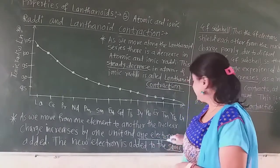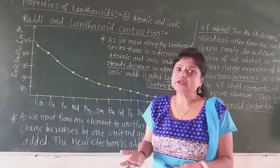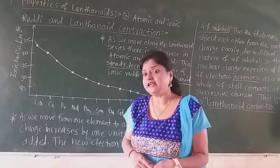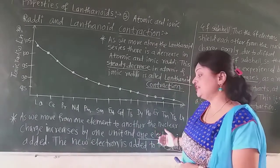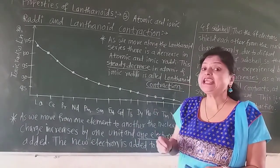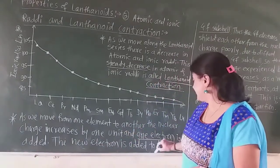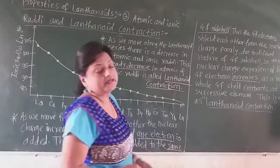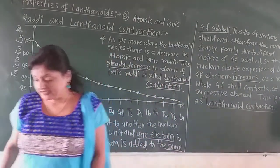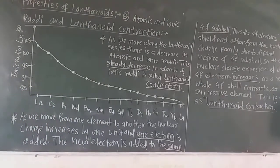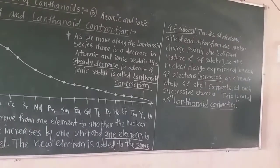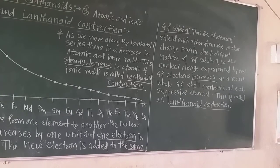At the same time, as one proton increases there is also an increase of one electron. But that one electron which is added goes into the same f-subshell. Thus the new electron is added to the same f-subshell. And the f-electrons shield each other from the nuclear charge very poorly.